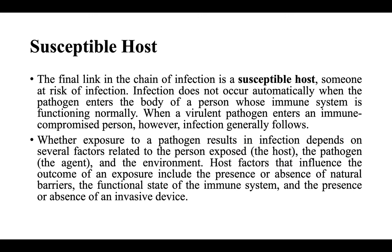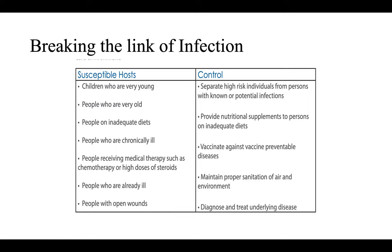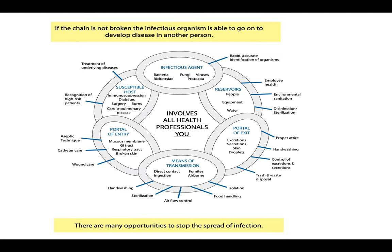The susceptible host is the final link in the chain of infection — someone at risk. If you have a proper diet and good nutrition, you are less susceptible. Children who are very young and people who are very old need to be kept separately in proper conditions. Good nutrition, proper hygiene, vaccination, proper sanitation, and early diagnosis are all ways to protect the susceptible host.